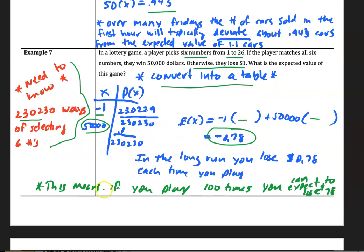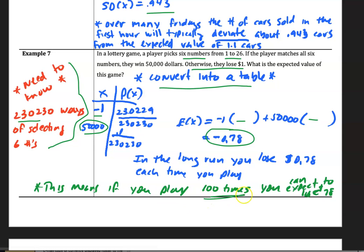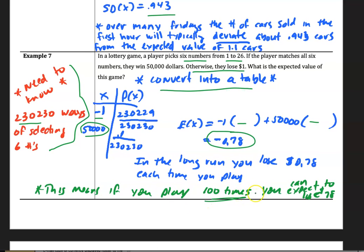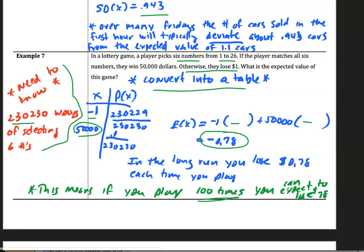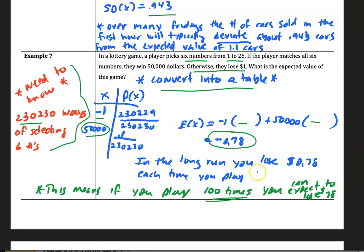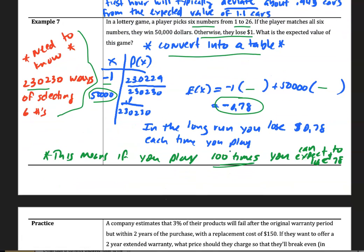So if you play this 100 times, let's say over 100 weeks, you would expect to lose $78 out of that process. That's the expected value. So it's a loser, and that's why gambling is tough.